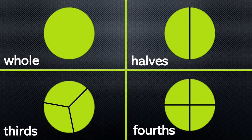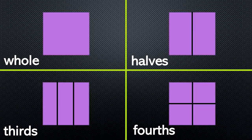Here is what it would look like with squares. Whole, halves, thirds, fourths. Remember, each time I divide a shape into different sections, if I'm going to have two sections for halves, they need to be the same size. If I'm going to have three sections for thirds, they need to be the same size. And if I'm going to have four sections for fourths, all four sections need to be the same size.